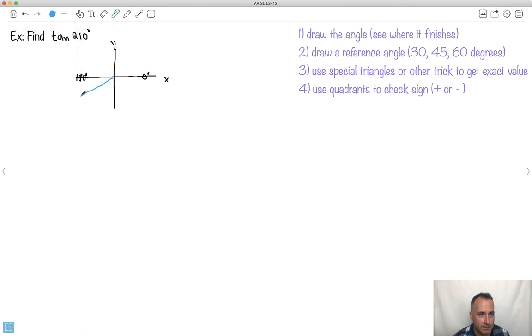Well, if I want 210, that's a little bit past that, isn't it? Somewhere like this. In fact, what's this angle here? Well, it's 180 plus what gives me 210? It's 30 degrees here.